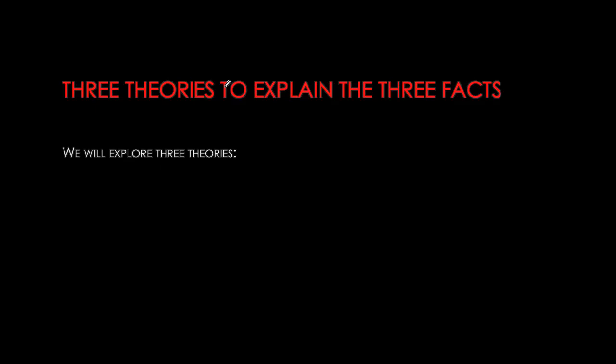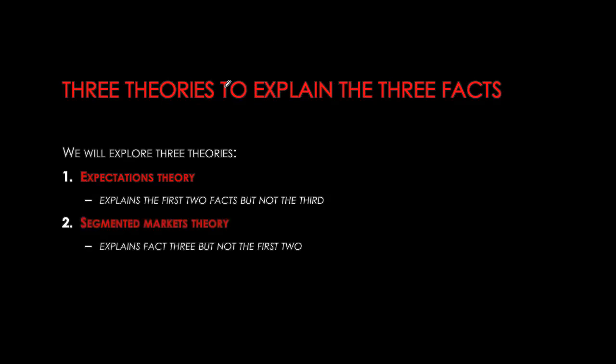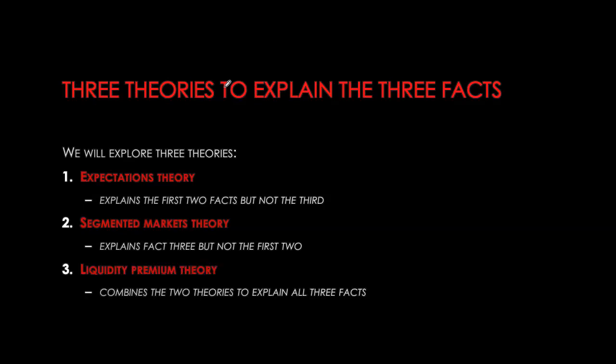To explain these three facts about the term structure of interest rates, we have different economic theories. We start with the expectations theory, then move to the segmented market theory, and finally bring these two together to form the liquidity premium theory — the most comprehensive tool for explaining interest rate movements for bonds with varying maturities.